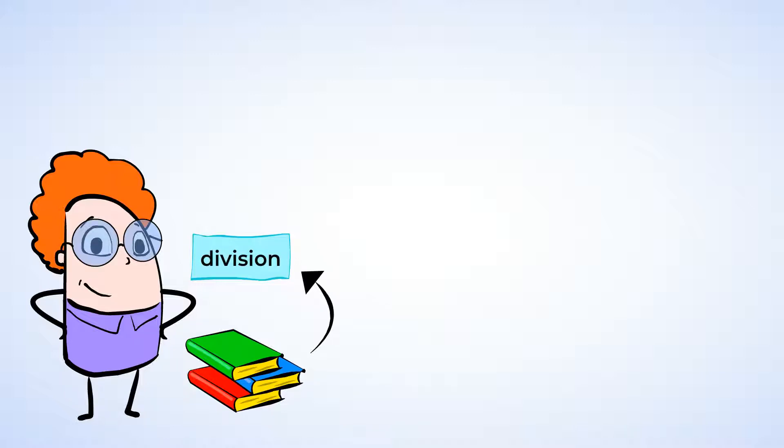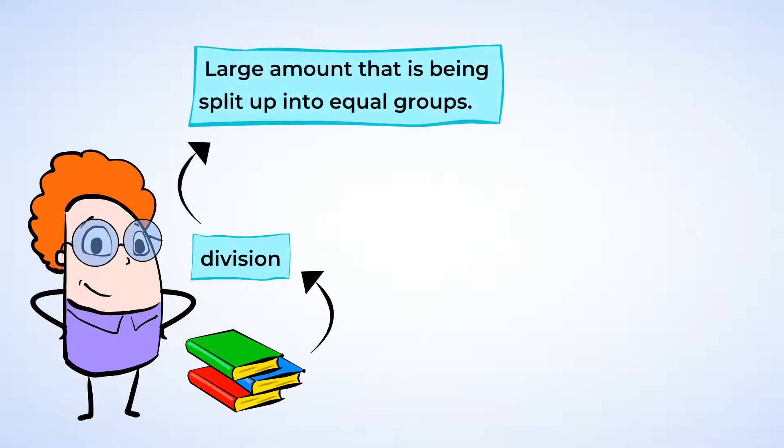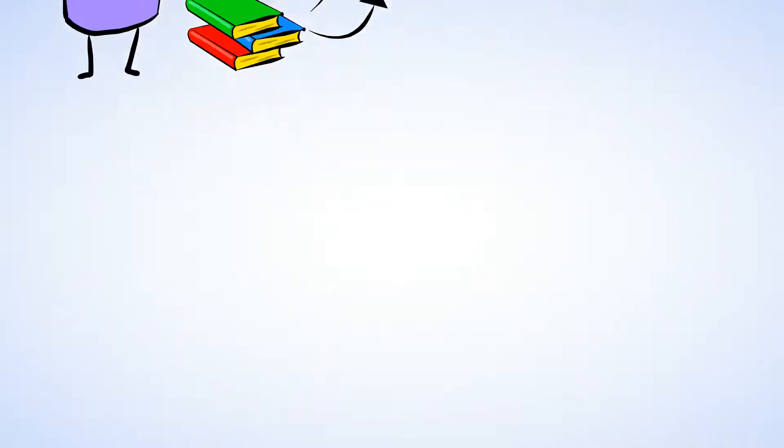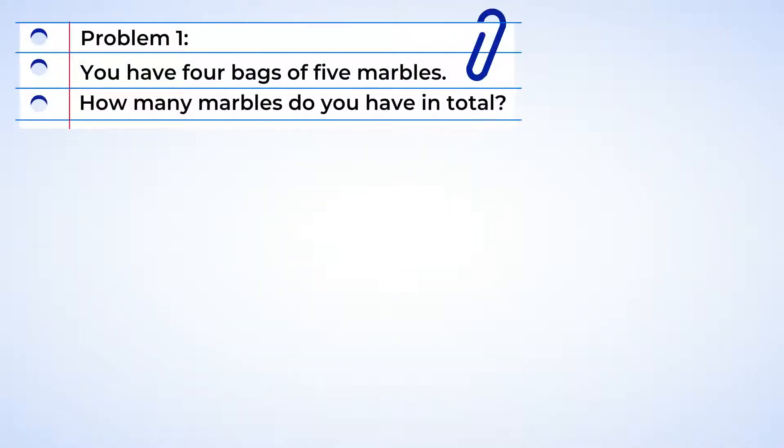Let's review first. Division is a large amount that is being split up into equal groups. And multiplication is groups that are being combined. I'll show you how those two are related, starting with some multiplication problems.